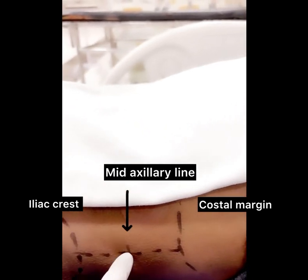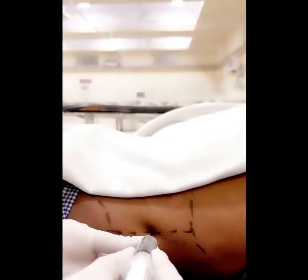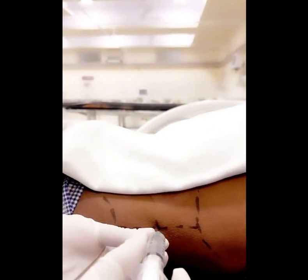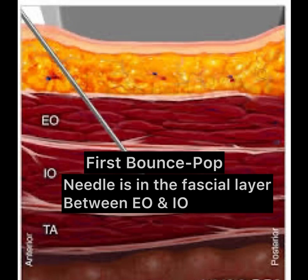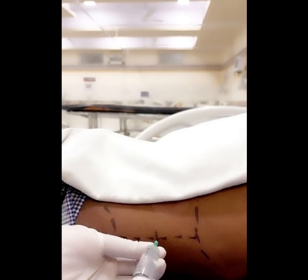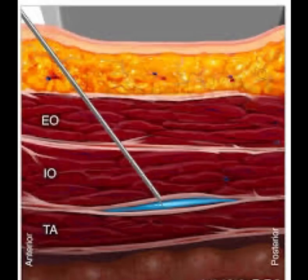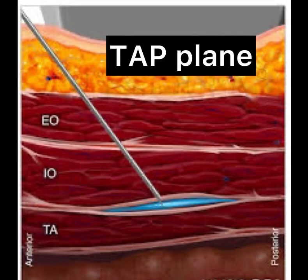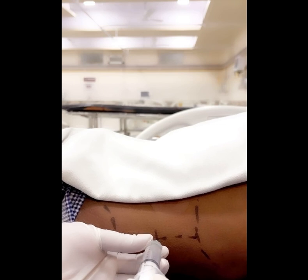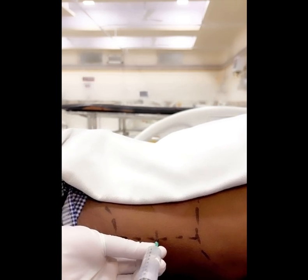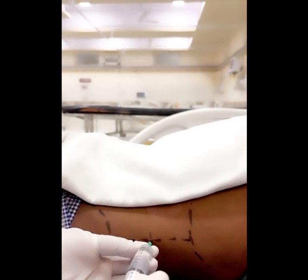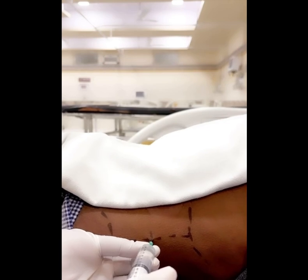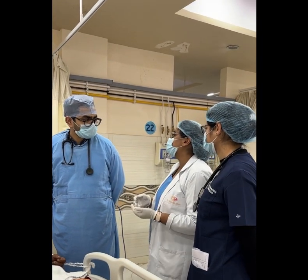A 50 mm needle is inserted perpendicular to the skin. The first 'bounce pop' indicates the needle is between the fascial layer of external oblique and internal oblique muscle. Advancing further, the second 'bounce pop' indicates the needle is between the fascial layer of internal oblique and transversus abdominis muscle — this is the TAP plane where the drug is deposited. Hold the needle, aspirate, and after negative aspiration administer the drug.